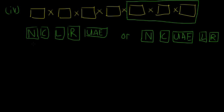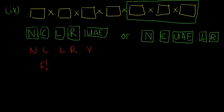If we label the vowels as V and just arrange N, C, L, R, and V, the answer would be five factorial — there are no restrictions on those five items. But it's not quite that simple, because the vowel block itself has multiple internal arrangements.